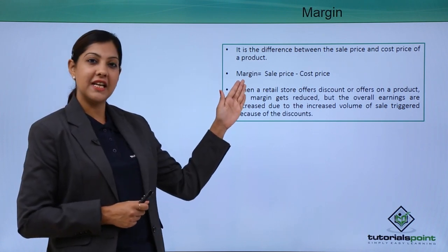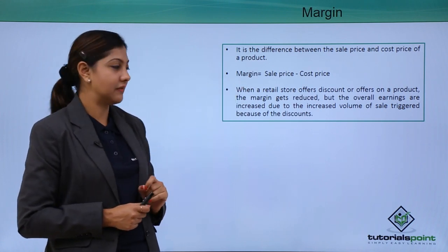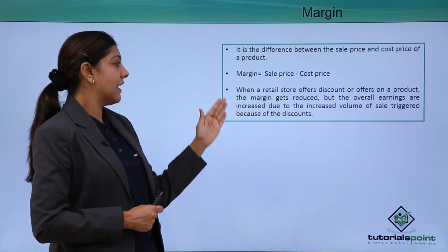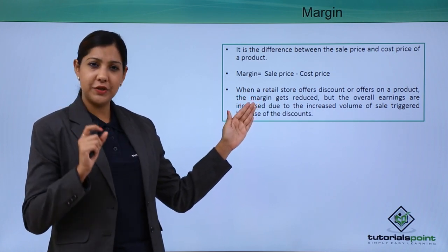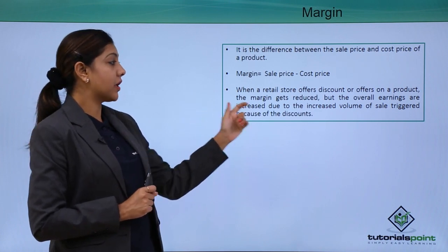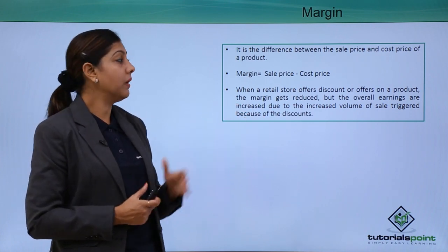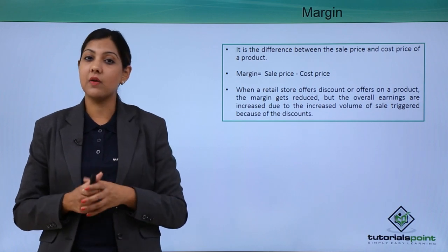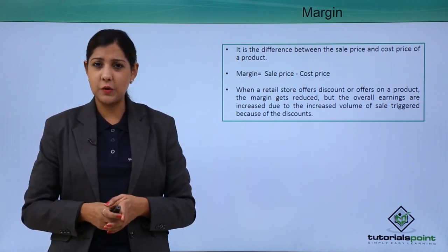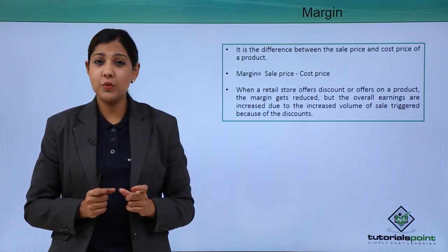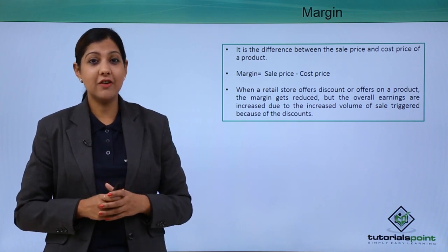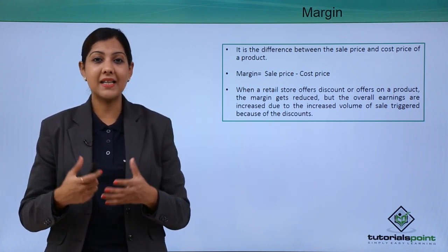When a retail store offers discounts and offers on a particular product, the margin gets reduced by a chunk, but overall earnings increase because of the increased volume of sales triggered by discounts. Whenever stores offer a 20% or 50% sale, they are reducing the margin, but the number of footfalls and the number of people buying the product increases because of these discounts.